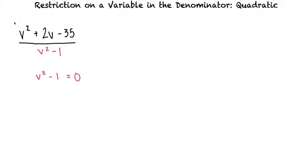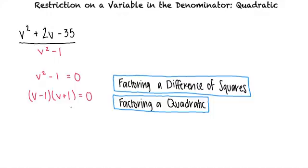We can factor that, right? We can factor the quadratic on the left to be (v − 1)(v + 1), and this is still equal to 0. If you need a refresher on factoring, please review the topics regarding factoring a difference of squares and factoring a quadratic. We can now solve this by setting both quantities equal to 0. For the first equation, we add 1 to both sides to get v = 1. For the second equation, we subtract 1 from both sides and get v = −1.